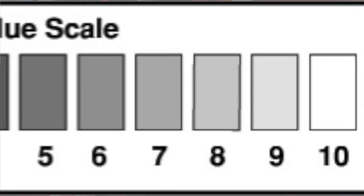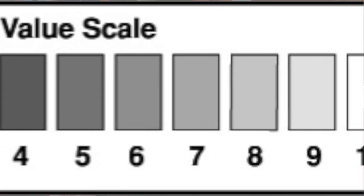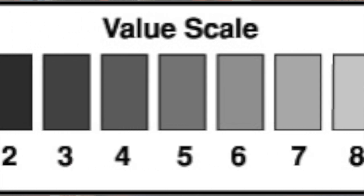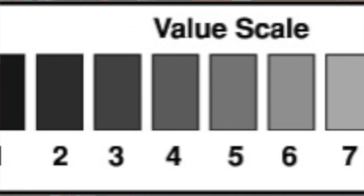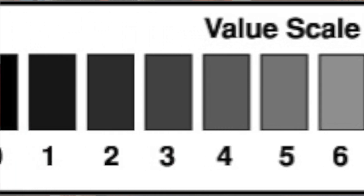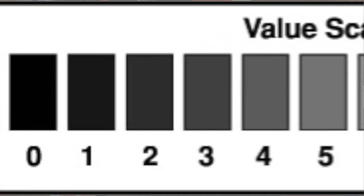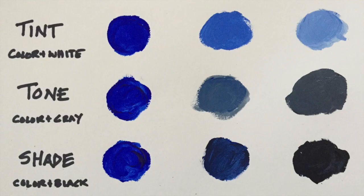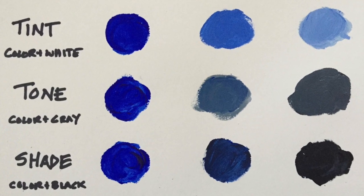Value can be represented in black and white through varying degrees of grays to transition from light to dark. But value can also have color — we would call this chromatic value.